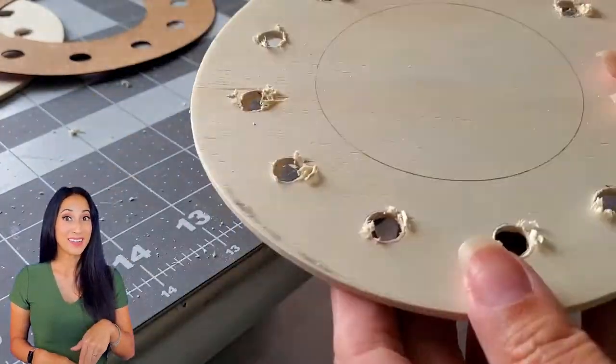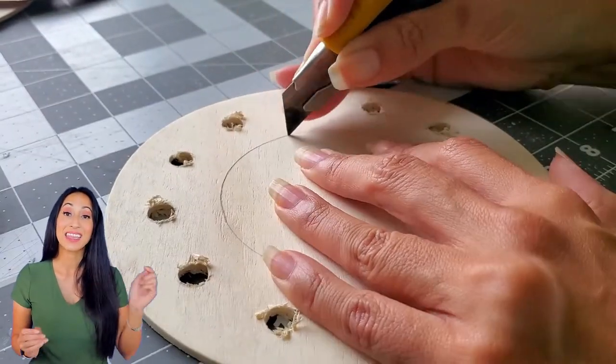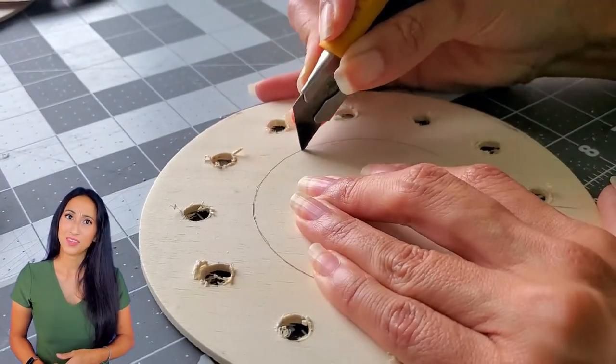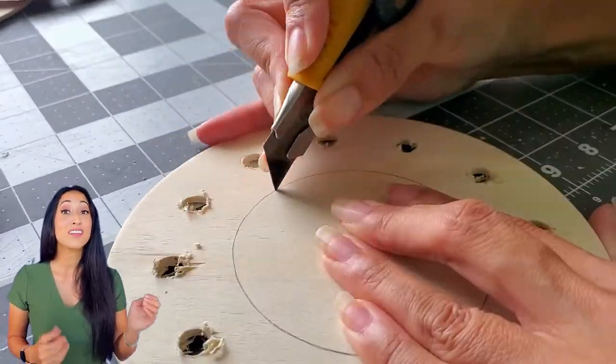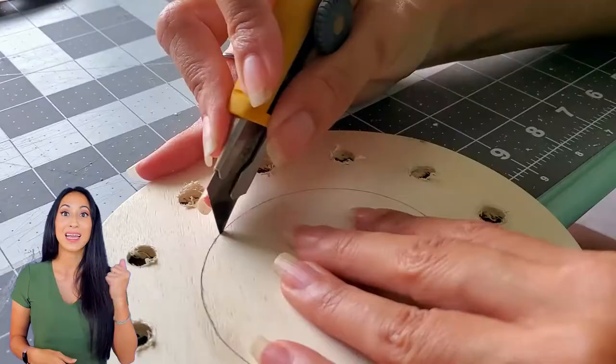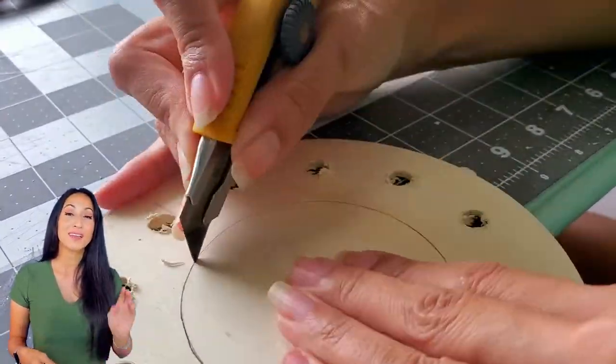Honestly, if I went back again, I'd probably just have the Cricut Maker cut out the center hole because man was that a pain in the butt. If you have a circular hole saw, this will make it so much easier, but I don't, so I had to use a razor blade. It took a lot of pressure and a long while.